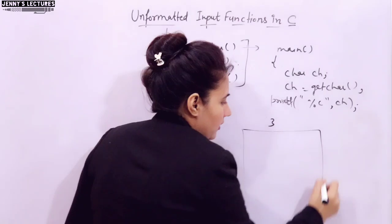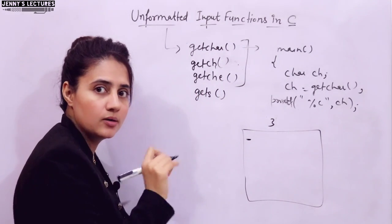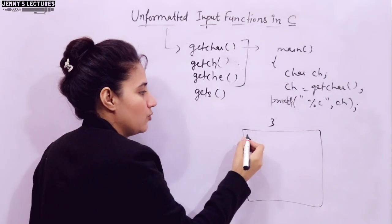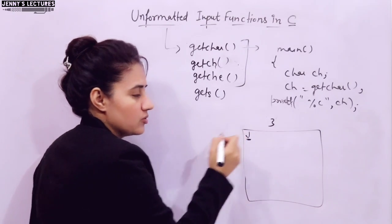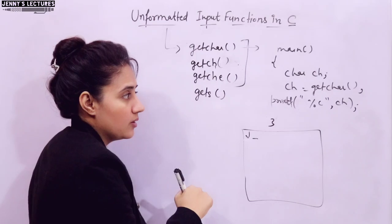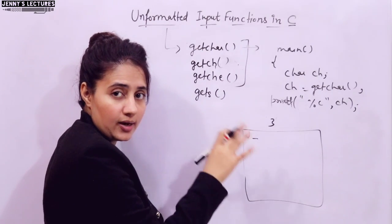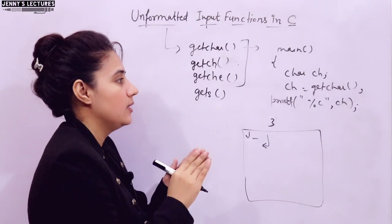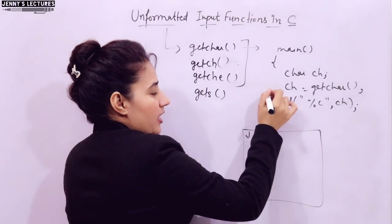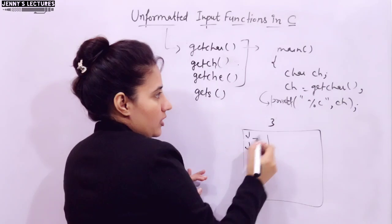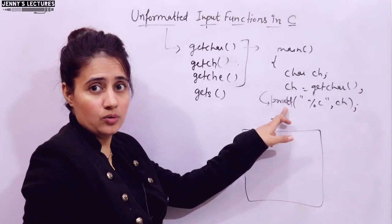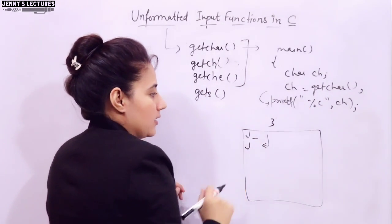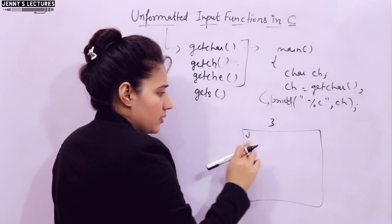When you run this program, you will see a blinking cursor on the output screen. You have to enter a character — suppose I enter J. That J would be displayed on screen and the cursor moves. It is waiting for you to press enter. Whenever you press the enter key, the next line executes and J is printed. I hope you know how to write printf — %c is the format specifier for character and ch is the variable.